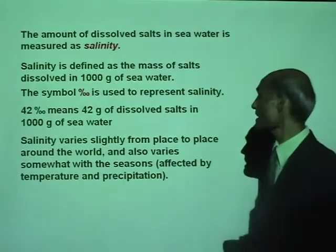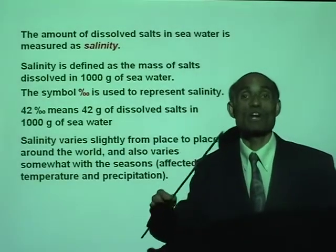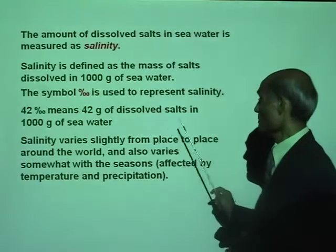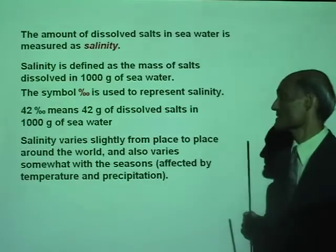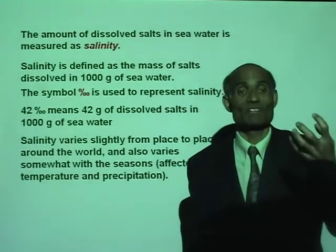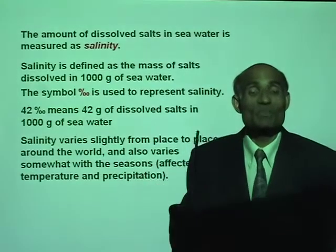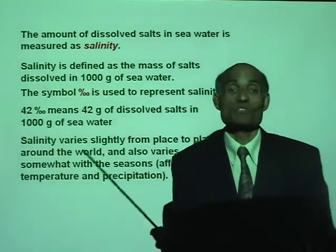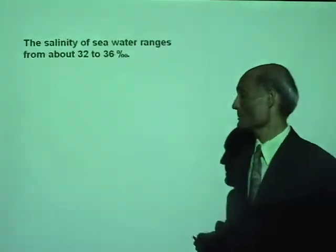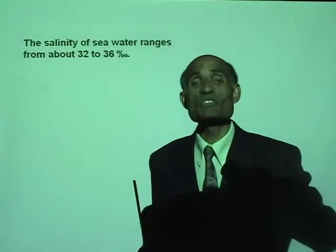Salinity varies slightly from place to place around the world. The Dead Sea, for example, has large amounts of dissolved materials and a higher density than water elsewhere. Salinity also varies somewhat with the seasons, affected by temperature and precipitation — a lot of rain will decrease the salinity, whereas a lot of evaporation will increase it. The salinity of seawater ranges from about 32 to 36 parts per thousand.